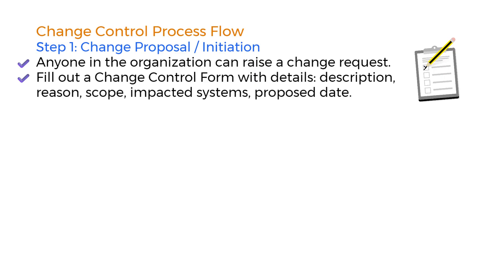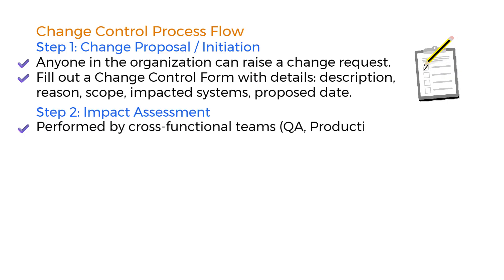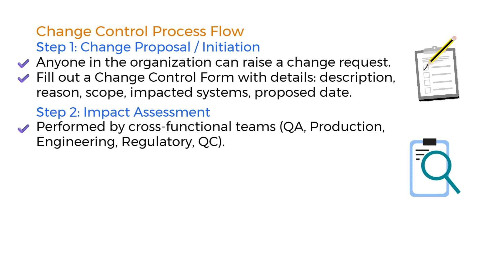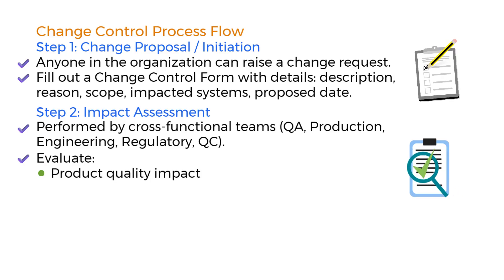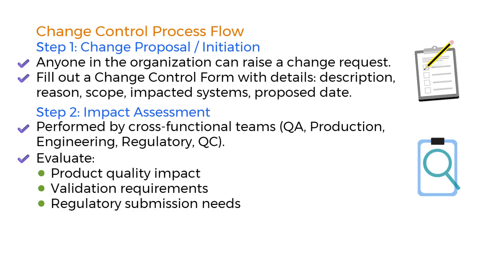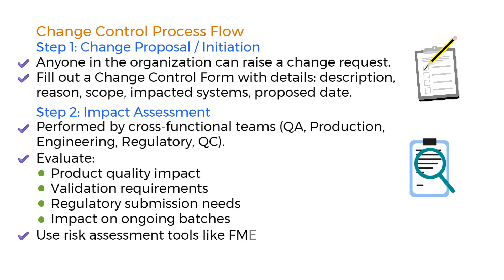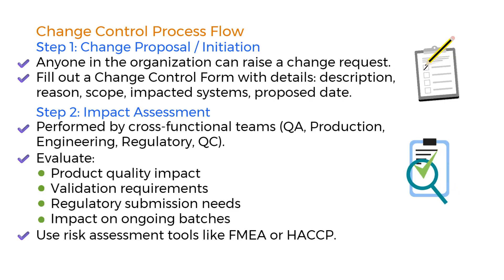It's crucial to define the change clearly and completely, because this is what drives the next steps. Step 2: Impact Assessment. This is the most critical phase, conducted by a cross-functional team typically involving quality assurance, production, engineering, regulatory affairs, and quality control. Their goal is to identify potential risks and determine whether the change could affect product quality, require validation or requalification, need a regulatory submission or prior approval, or interrupt ongoing batches or processes. Teams often use risk management tools like FMEA (failure modes and effects analysis) and HACCP (hazard analysis and critical control points).